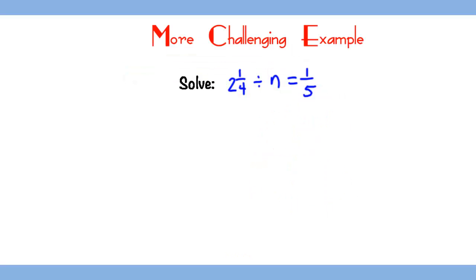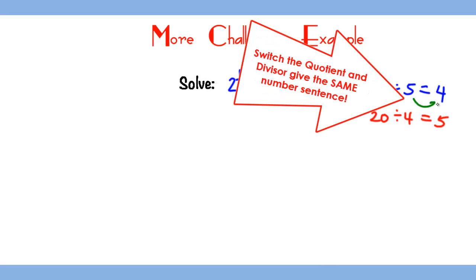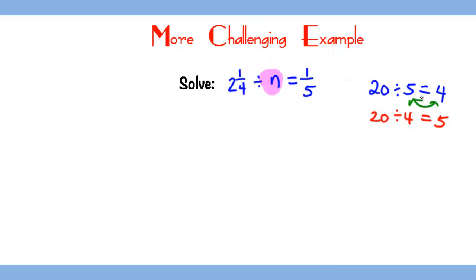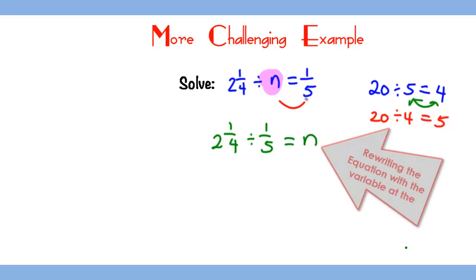In this question, we have 2 1/4 divided by a number we don't know equals 1/5. As a reminder, if 20 divided by 5 equals 4, I can also rewrite this as 20 divided by 4 gives you 5 — the order of the 5 and 4 is just switched. Applying the same thing to this fraction example, we do 2 1/4 divided by 1/5 to find the missing number, which is just switching the order of the two numbers.